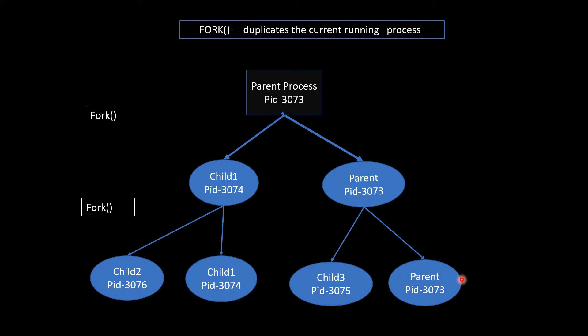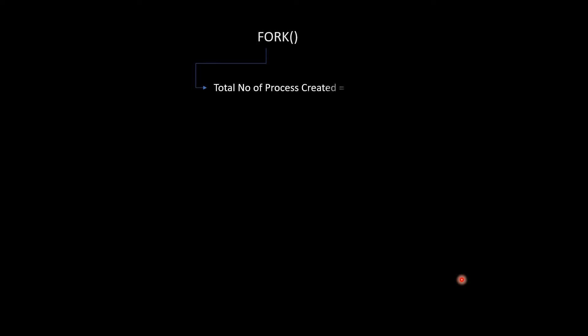Let's move to the next slide and have some fun with fork. The first condition is that the total number of processes created equals 2 to the power n, where n is the number of times fork has been called continuously. The second condition is that the total number of child processes is always 2 to the power n minus 1.